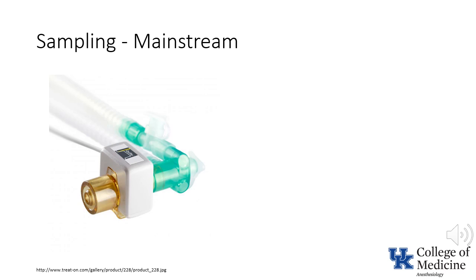The primary advantage of mainstream capnometry is the response time — you see the value almost immediately. Have you ever held your breath waiting for a CO2 waveform after a particularly difficult intubation? You wouldn't have to wait so long if mainstream sampling was used. The primary disadvantage is that the measuring device, attached to the circuit, has some weight and tends to pull the tracheal tube out unless properly supported.